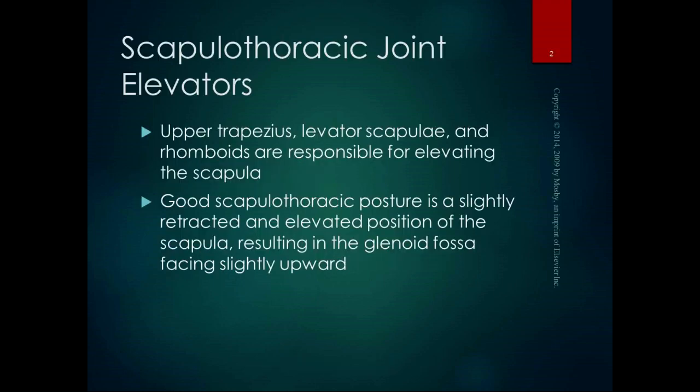The first group is the scapulothoracic joint elevators — these things elevate the scapula: upper trapezius, levator scapula, and rhomboids. Good scapulothoracic posture is considered to be slightly retracted and elevated, which results in the glenoid fossa facing slightly upward. In the functional considerations section, we'll talk about why this is important for good shoulder alignment.